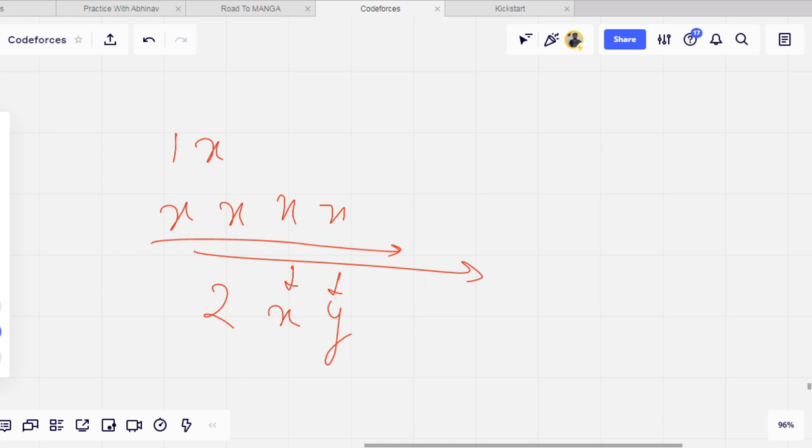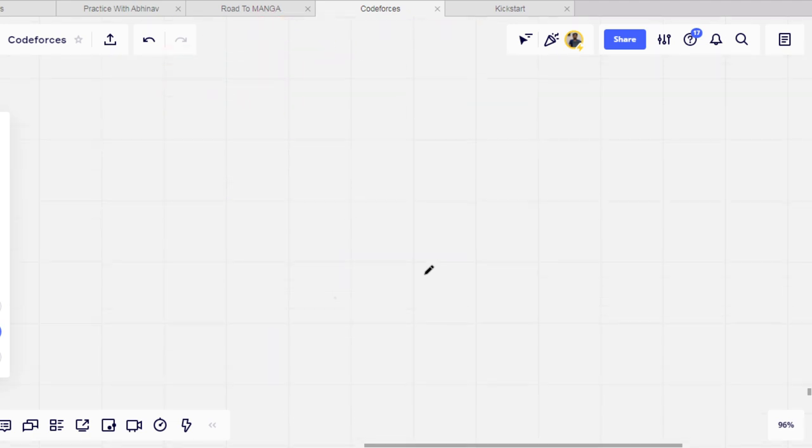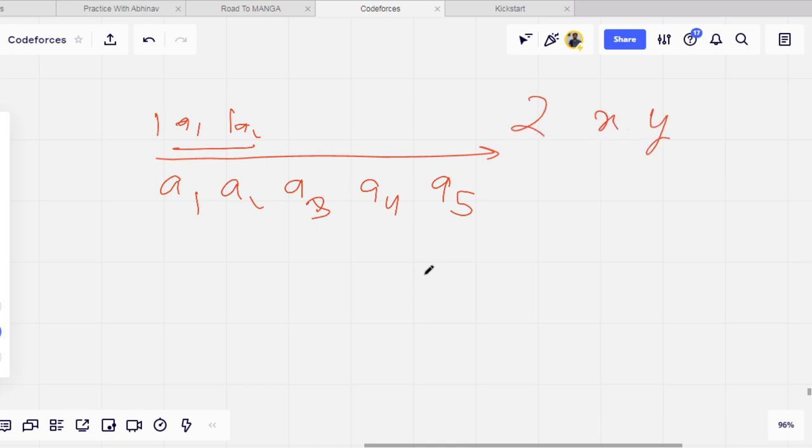Let me explain with an example. Suppose we have an array with elements a1, a2, a3, a4, and a5. When we get a type 2 query to replace X with Y, we need to go through the array from the beginning and replace every X with Y. This gives us O(N*Q) complexity which is too slow for the given constraints.